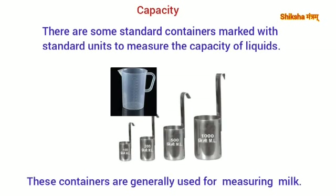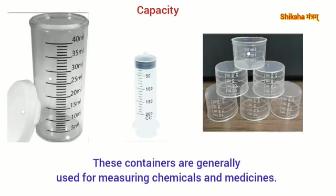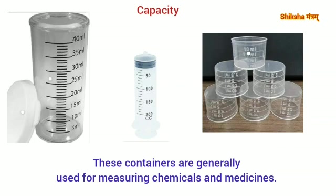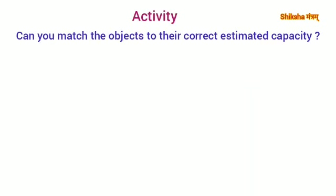For example, some containers are generally used for measuring milk, others are generally used for measuring petrol and oil, and some containers are generally used for measuring chemicals and medicines. Smaller capacities are measured in milliliters and the larger ones in liters.